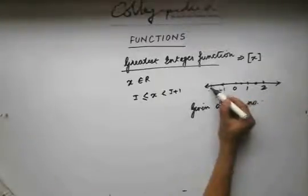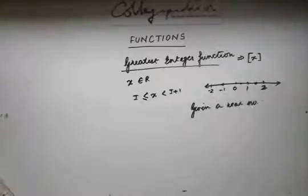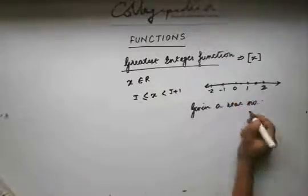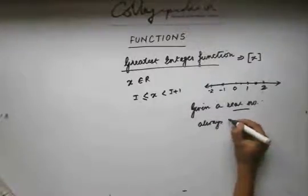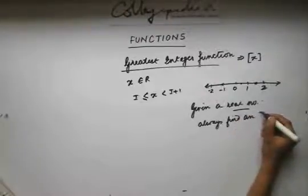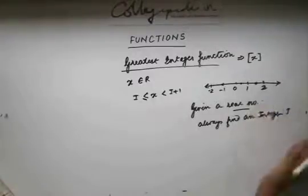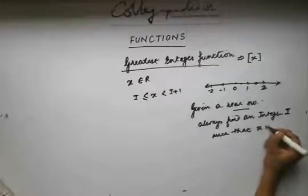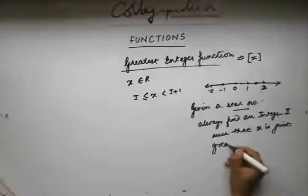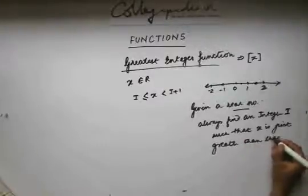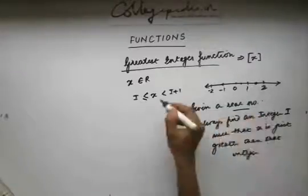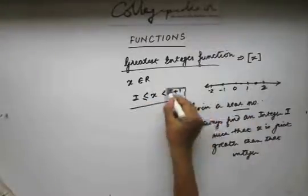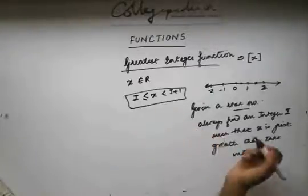Also, if I am given minus 1.5, I can say that minus 1.5 lies between minus 2 and minus 1. That means, given any real number, we can always find an integer i so that the given real number x is always greater than or equal to i. If I am given any real number, I can always find an integer i such that x is just greater than that integer. That integer i is called the greatest integer function.